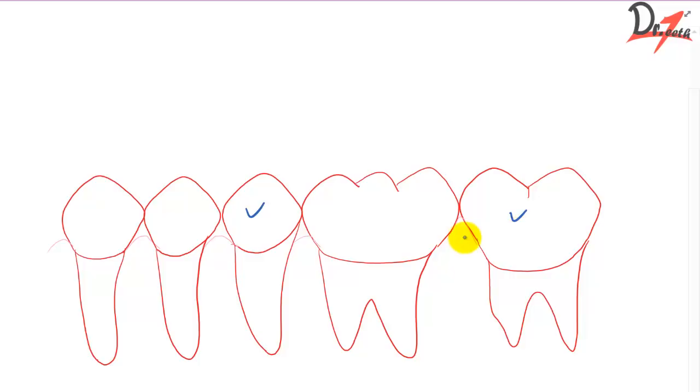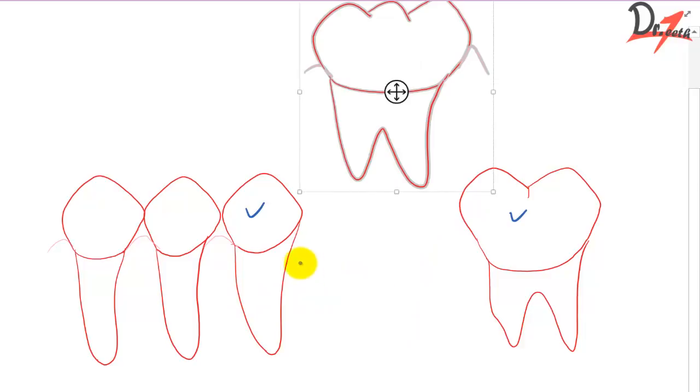So if one tooth is missing, if a single tooth is missing, it can be successfully replaced by the adjacent teeth.